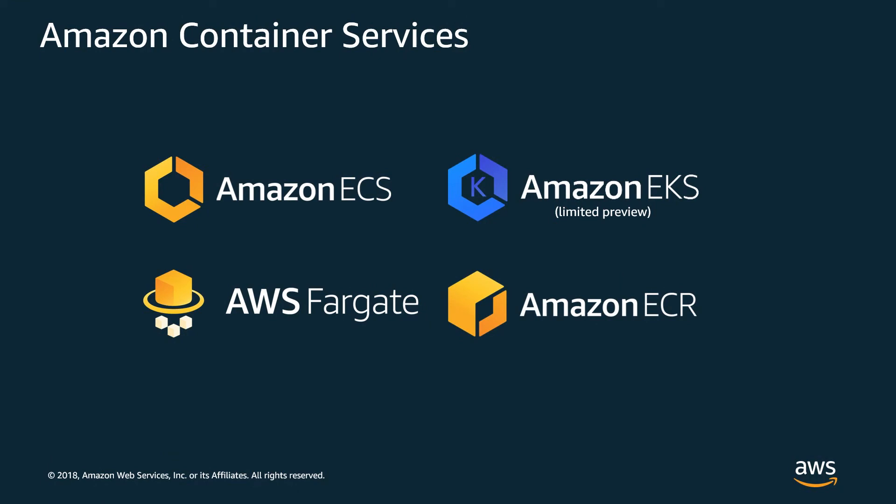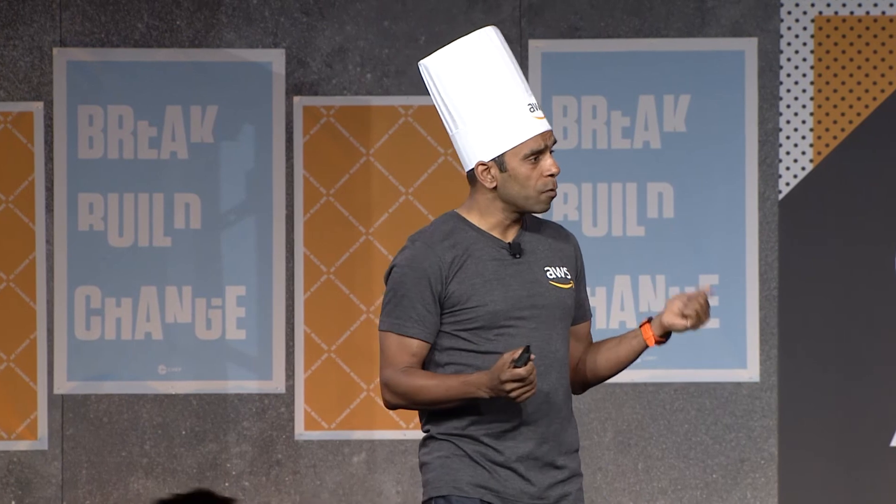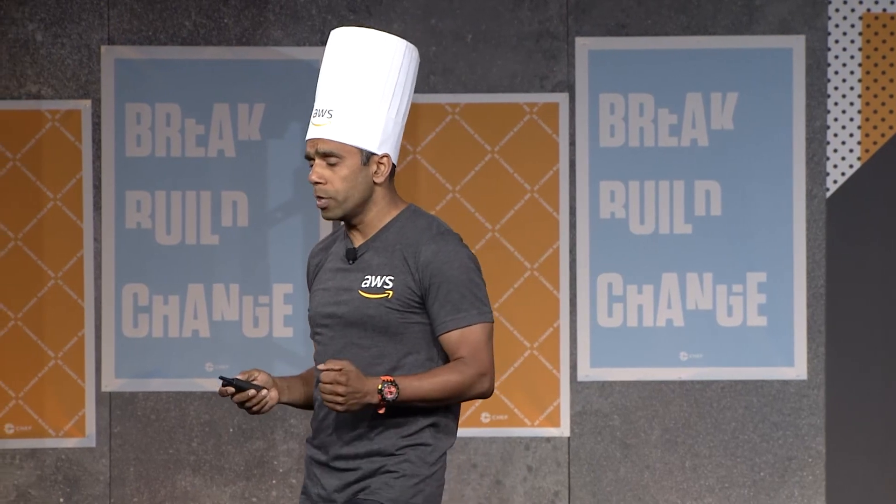At Amazon, we have several offerings to help you deploy your containers at scale. We launched Amazon ECS over three years ago as our native container-managed solution. We announced EKS, our managed Kubernetes service at last year's re:Invent, which is in limited preview. We also announced AWS Fargate, a provider where you don't even have to worry about container clusters — you just bring your containers, and we run and scale them for you. And of course, we have a managed registry as well.